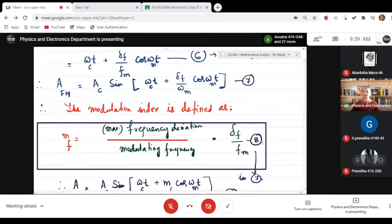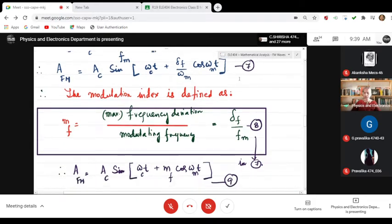Maximum Frequency Deviation divided by fm, that is delta f by fm. So, substitute this in equation 7 in the above equation. What do you get? So, you are substituting this equation here.